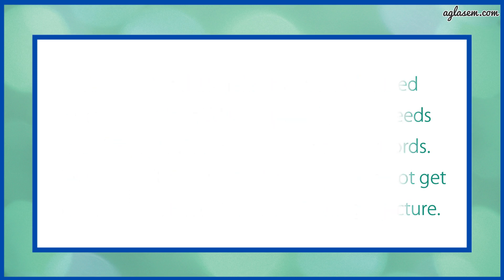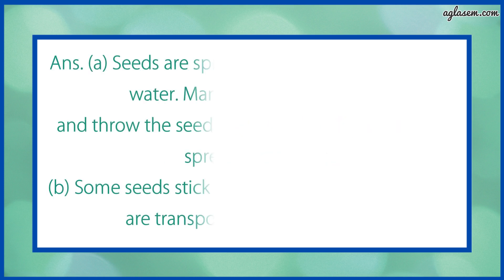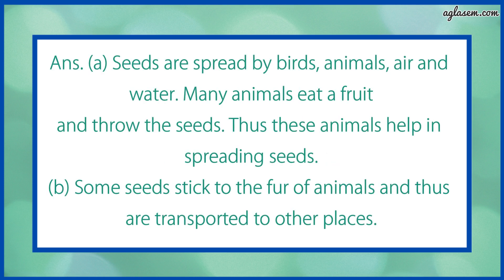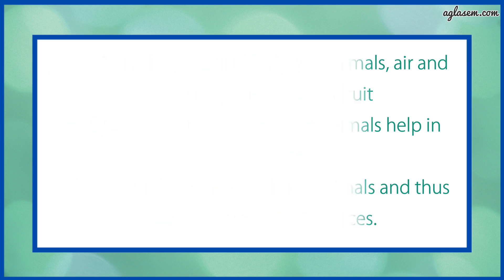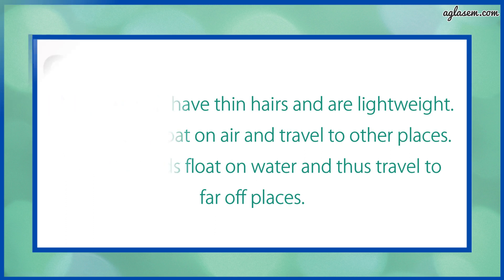Question number 2 says: how do seeds spread to far off places? Write in your own words. The answer is: first, seeds are spread by birds, animals, air, and water. Many animals eat fruit and throw the seeds, thus helping in spreading seeds. Second, some seeds stick to the fur of animals and are transported to other places. Third, some seeds have thin hair and are lightweight — these seeds float on air and travel to other places. Fourth, some seeds float on water and travel to far off places.